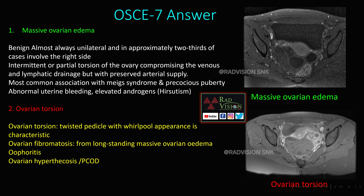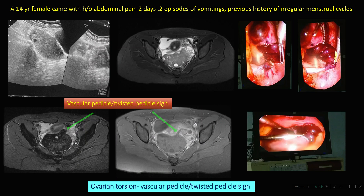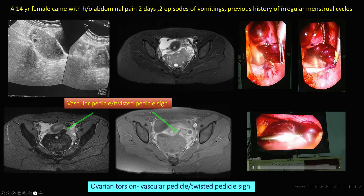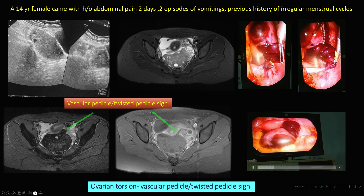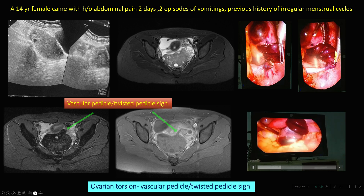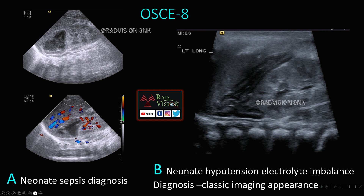The most common association is with Meigs syndrome and precocious puberty. There will be abnormal uterine bleeding and elevated androgens — explaining the hirsutism in this case. Differential diagnoses include ovarian torsion, where you can see a twisting pedicle sign and whirlpool appearance, ovarian fibromatosis, ovaritis, ovarian hyperthecosis, and PCOD. In the comparison case of ovarian torsion: the right ovary is completely enlarged with peripherally placed follicles, follicular rim sign is seen, significant blooming on GRE, no enhancement on IV contrast, and a vascular twisted pedicle sign — confirming complete hemorrhagic ovary with twisted vascular pedicle.